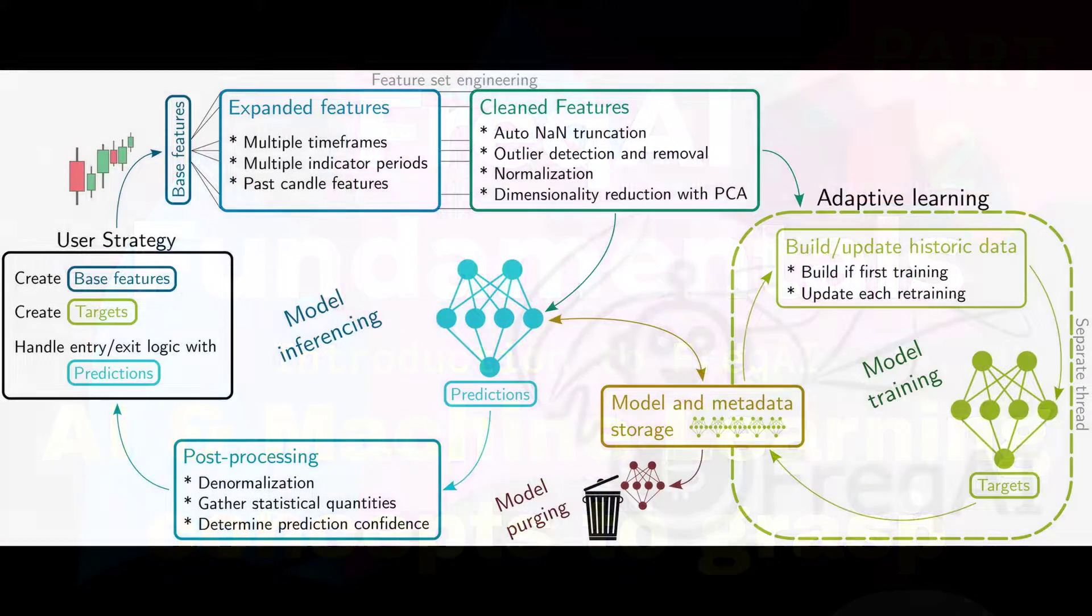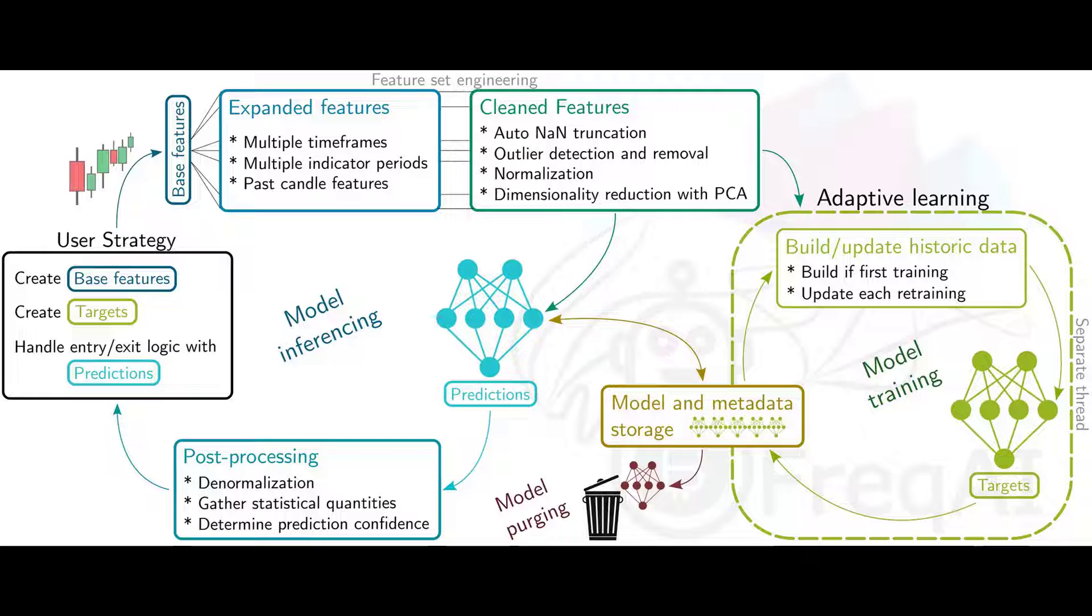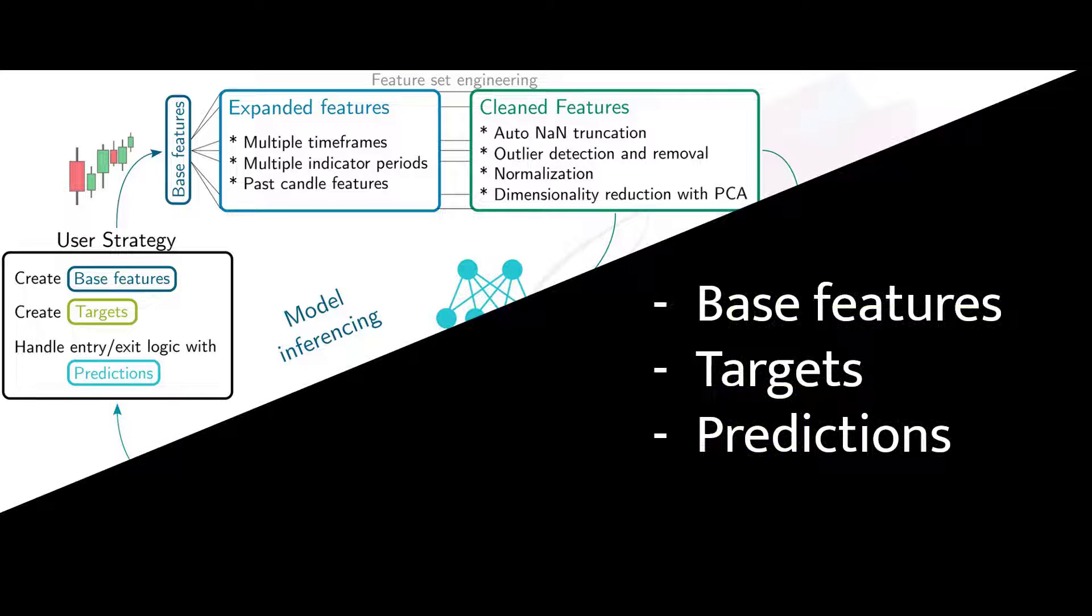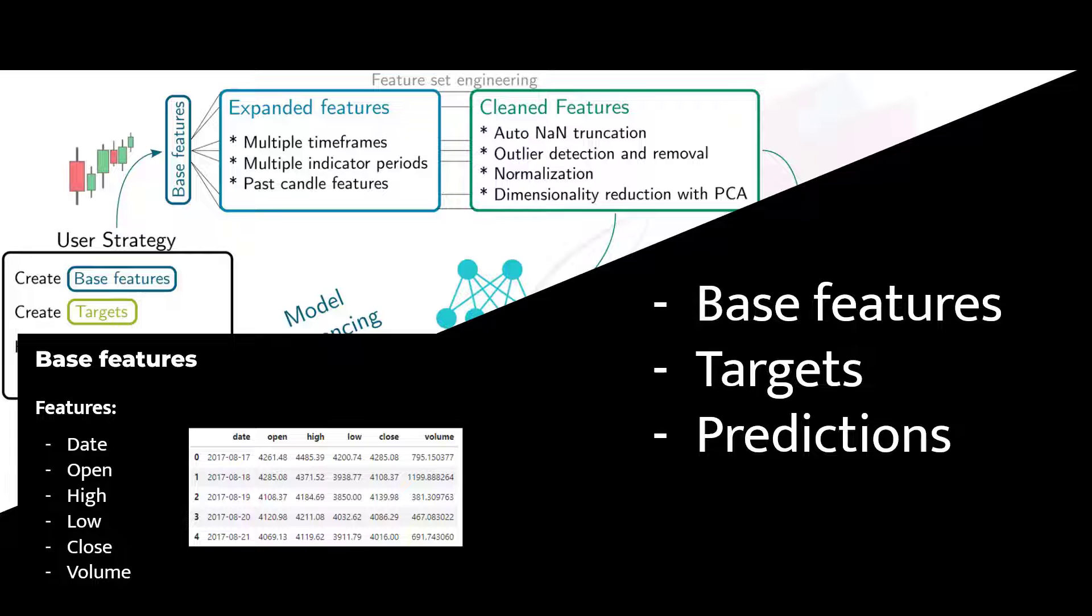Let me first refresh the first part of this pipeline for you. It consists of multiple steps and in each step the data is manipulated and analyzed to make a prediction. Eventually these predictions will lead to a trading decision that will be made by the trading bot. In my previous video I explained the first three steps of the process and explained what base features, targets and predictions were.